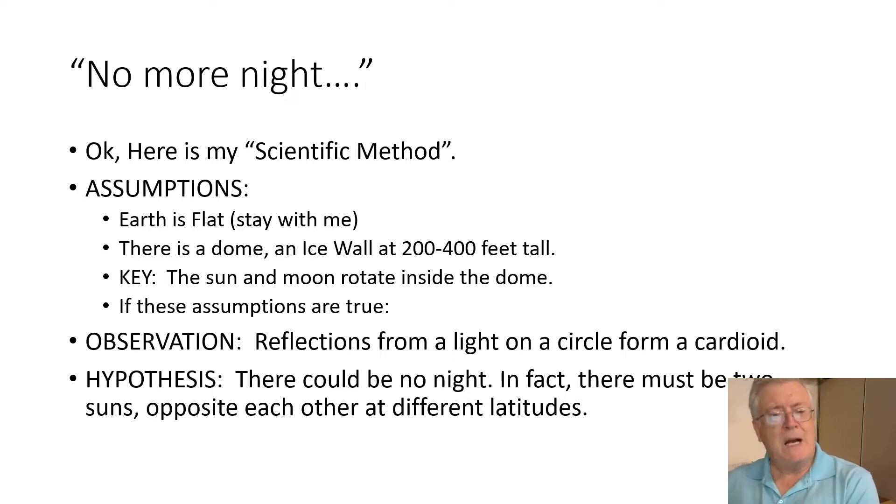So here's my scientific method. Assumptions we have to make: The Earth is flat, stay with me here. There's a dome, an ice wall, at two to four hundred feet tall. The Moon and the Sun rotate inside the dome. So if these assumptions are true, my observation is that reflections from a light on a circle form a cardioid. A cardioid I'll show you here in a minute. The hypothesis is there could be no night. In fact, there must be two suns opposite each other at different latitudes.